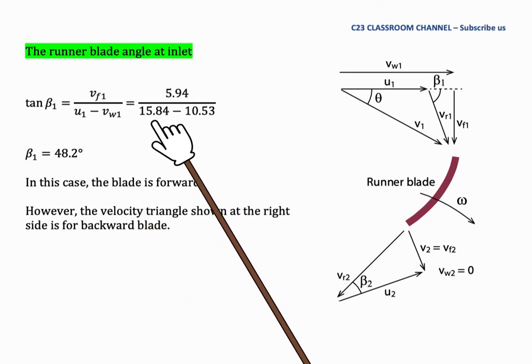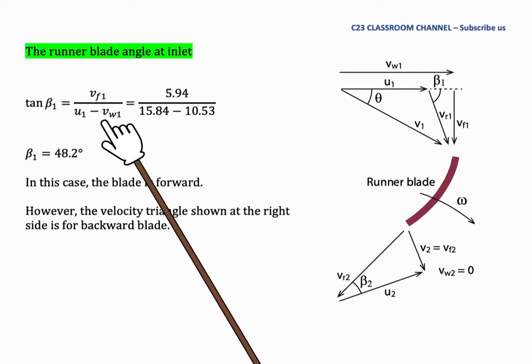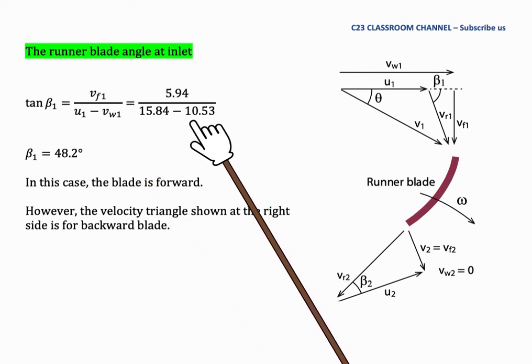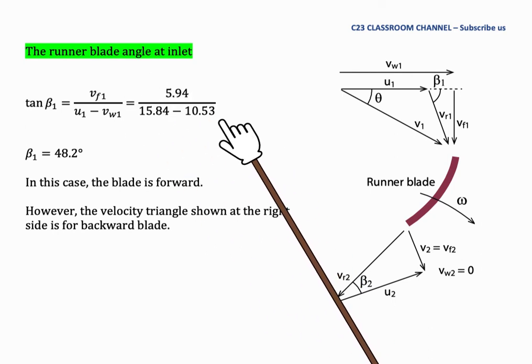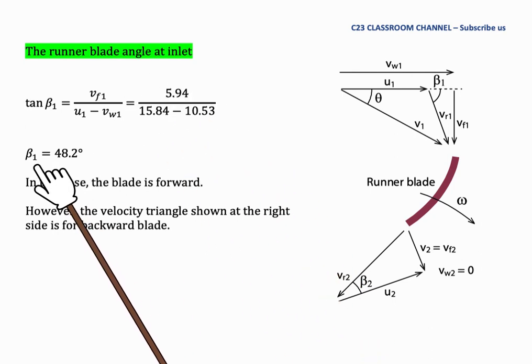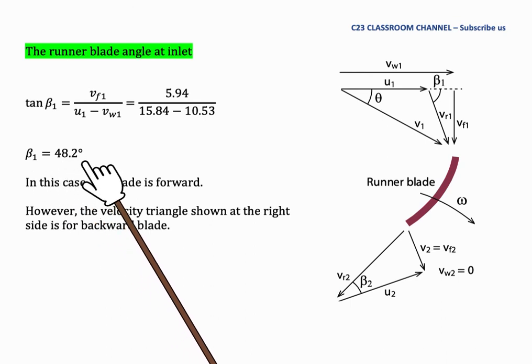The equation for tangent beta 1 will become VF1 over U1 minus Vw1 because U1 is 15.84 which is bigger than Vw1 which is 10.53. We solve this equation and get beta 1 is equal to 48.2 degrees.